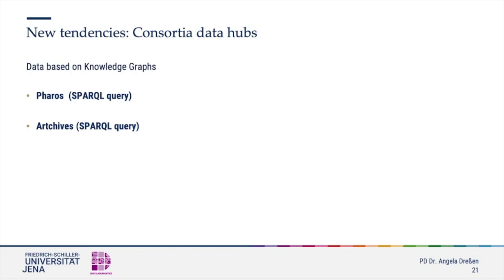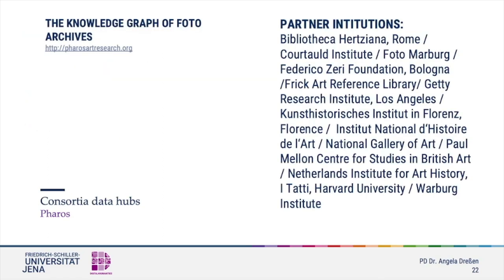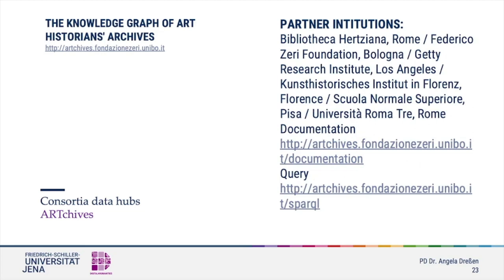The efforts to create these data hubs are usually driven by cultural heritage institutions. Of the several consortia enterprises currently underway, I will only mention two: Pharos and Archives. Pharos is a consortium of 14 international photo collections that share one SPARQL endpoint. Archives is a consortium of currently six international archives with a shared SPARQL endpoint — these institutions and collections share that they are centered around an important art historian. Both projects are based on knowledge graphs with complex ontologies that allow for refined searches and complex results. Although both endpoints are still in beta versions, they will add significant possibilities for future art historical research.